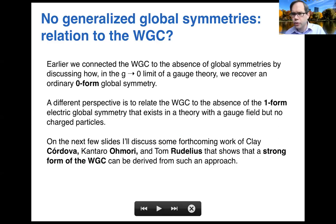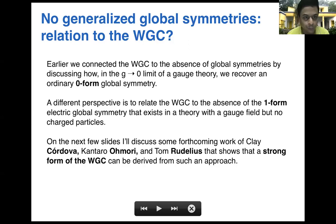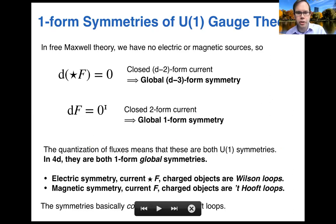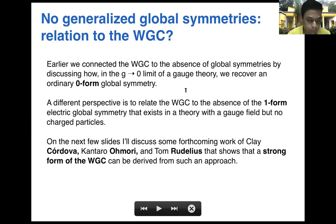Question from audience: The setup you described is only for a compact U(1) symmetry, and that does not hold true for a non-compact U(1), right? Speaker: That's right. When I say U(1), I mean compact. If it were non-compact, I would call it ℝ. If you have a non-compact abelian symmetry, this would not be true anymore — there would still be symmetries to talk about, but they wouldn't be U(1) global symmetries. I always have in mind a compact U(1) symmetry, which means in particular that there could be magnetic monopoles — I'm just assuming there aren't for the moment.